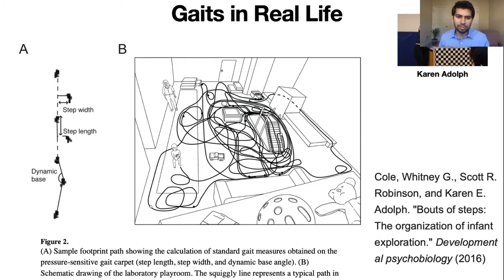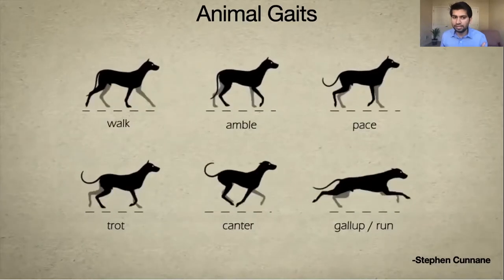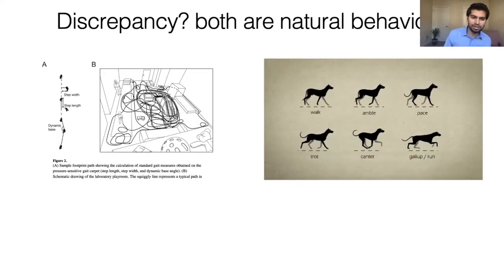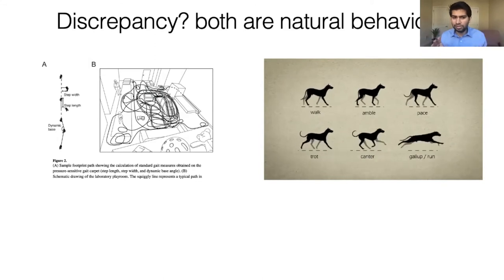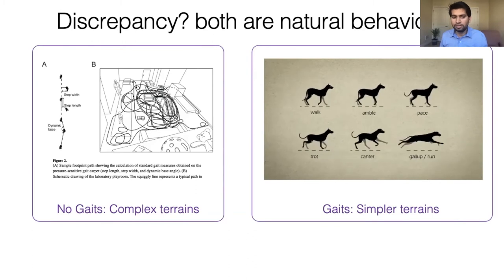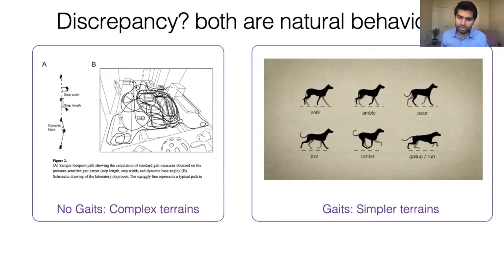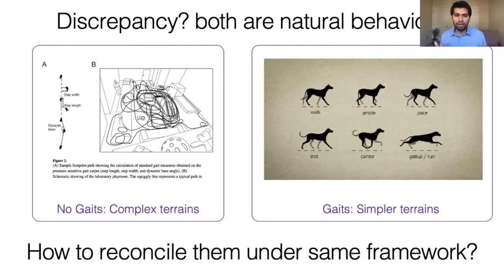However, we know this story is not completely true because animals do display very structured gates: walking, amble, pace, trot, canter, gallop — studied by many people, like Hildebrand 1965. The reconciliation: most studies finding no structured gates are done on complex terrain, while animals show structured gates only on simpler terrain. On complex terrain, animals also show unstructured gates. So how do we reconcile both ideas and get emergent gates?